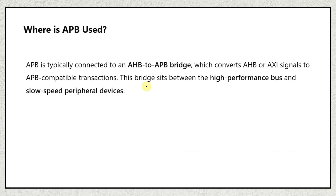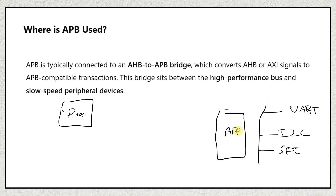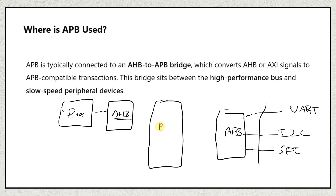APB is typically connected to an AHB-to-APB bridge which converts AHB or AXI signals to APB-compatible transactions. For example, if a processor wants to communicate with slow peripherals like GPIO, UART, I2C, or SPI — these are low frequency, low powered peripherals — they are connected via the APB interface. APB cannot connect directly to the processor; the processor connects via AHB or AXI, and a bridge design converts AHB signals to APB signals.